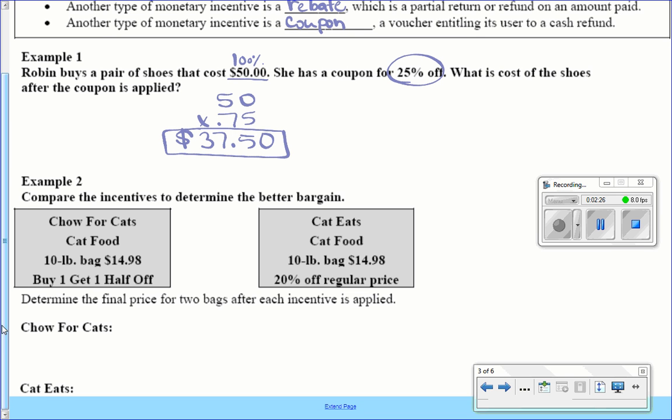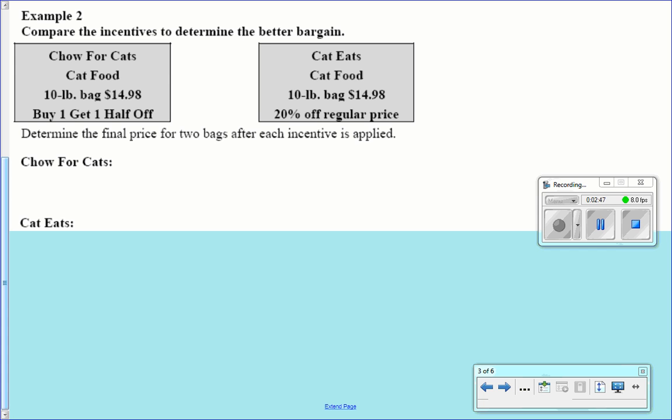All right. In example number two, we're going to be comparing which one is the better bargain. So determine the final price for two bags after each incentive is applied. So when we're talking about better bargain, we're looking for what? The cheaper, the cheapest price, right? We want to pay the least amount of money.